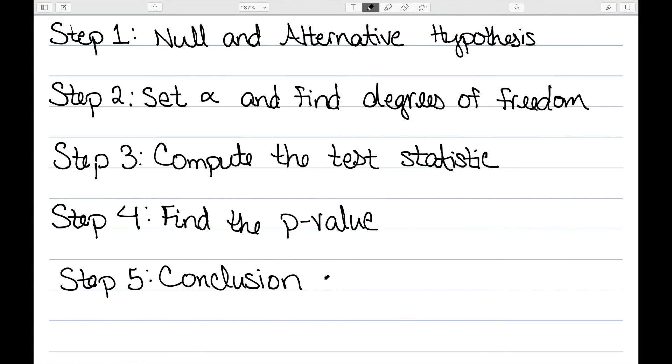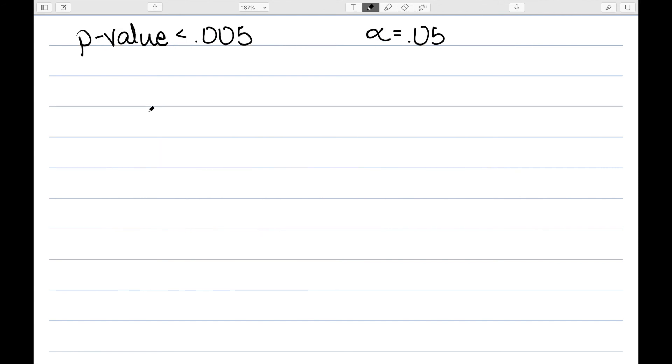We can then move on to our final step, the conclusion. And this will work the same as every other hypothesis test. We have that our p-value is 0.005 and we know alpha is 0.05. So we can see that our p-value is smaller than alpha.